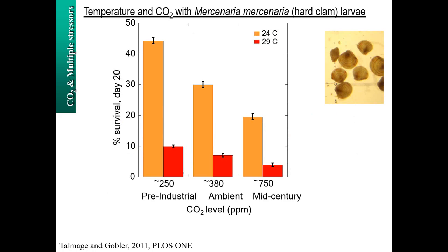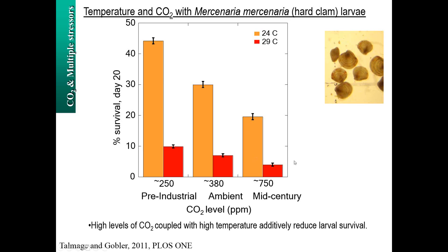I'll give a quick example. One of the first studies done in my lab considered acidification combined with temperature. What's shown here is the survival of Mercenaria mercenaria larvae — hard clams — reared from fertilization through metamorphosis. We used three different levels of CO2 and two different temperatures: one that we have today and one expected during future summers when these individuals are spawning. Our results showed a CO2 effect but also a very strong temperature effect, and these two stressors combined additively to give very poor outcomes for survival, demonstrating that co-stressors of warming and acidification can be very detrimental to this particular fishery.